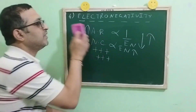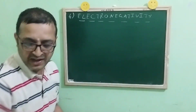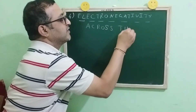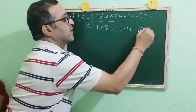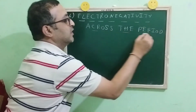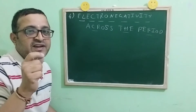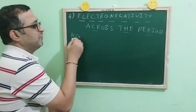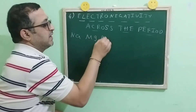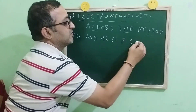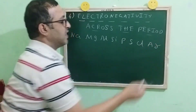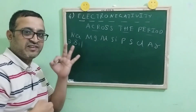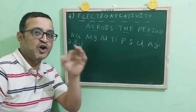Now the next question: how does electronegativity vary across the period? To understand this, we consider the elements of period 3: sodium, magnesium, aluminium, silicon, phosphorus, sulfur, chlorine, and argon. Sodium's electronic configuration is 2, 8, 1 — three shells — so these elements belong to period 3. Chlorine's configuration is 2, 8, 7 and argon is 2, 8, 8.